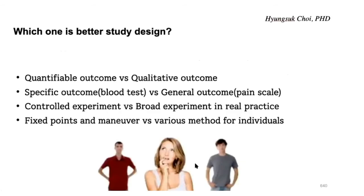Which one is better study design? What do you think? Quantifiable or qualitative? A specific outcome like a blood test, x-rays, MRIs, and general outcomes like pain scale or how happy you are, how satisfied with my class — it's a very general outcome, isn't it? And controlled experiment versus broad experiment in a real practice.